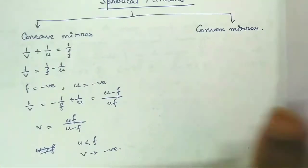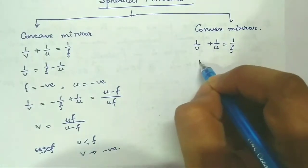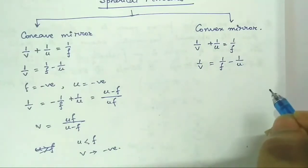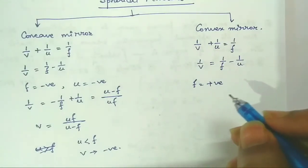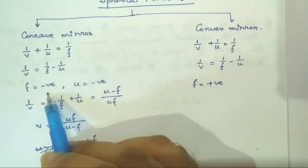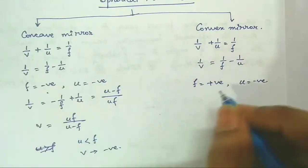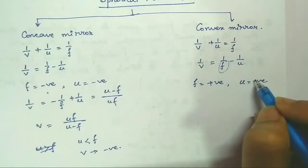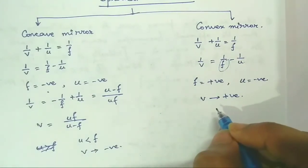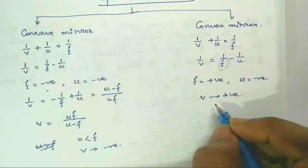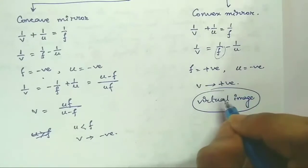For a convex mirror, the mirror formula is similarly 1/V plus 1/U equals 1/F, or 1/V equals 1/F minus 1/U. For a convex mirror, F is always positive, and for a real object U is always negative. Since F is positive and U is negative, V is always positive — meaning we always get a virtual image of the object for a convex mirror.